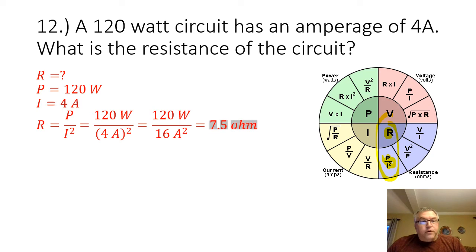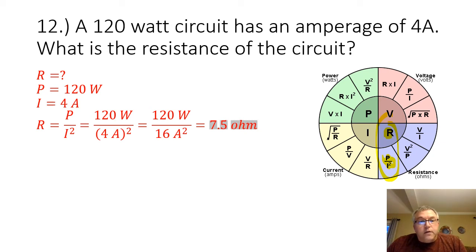So we have R equals P over I squared. 120 watts divided by 4 amps squared is 120 watts divided by 16 amps, which equals 7.5 ohms.